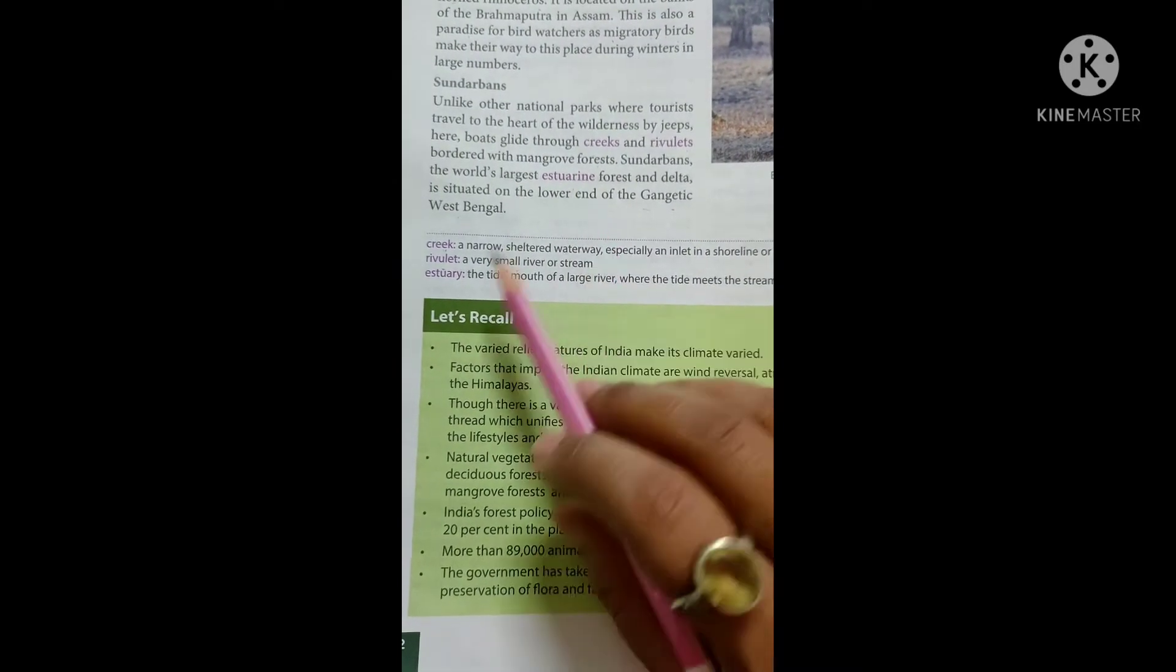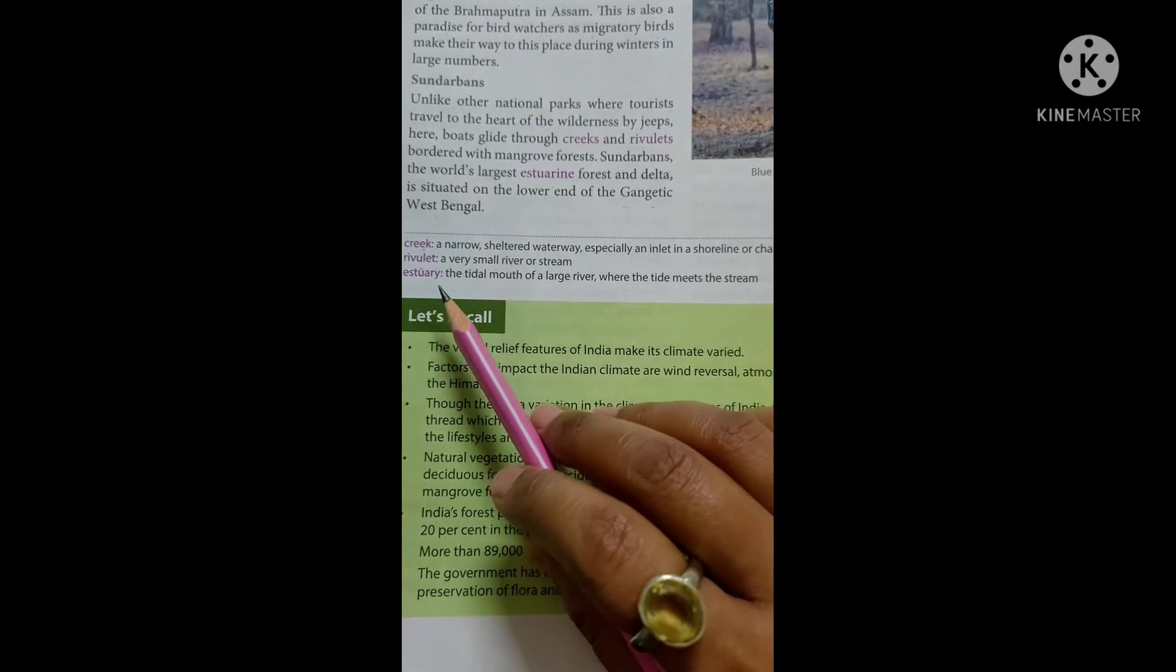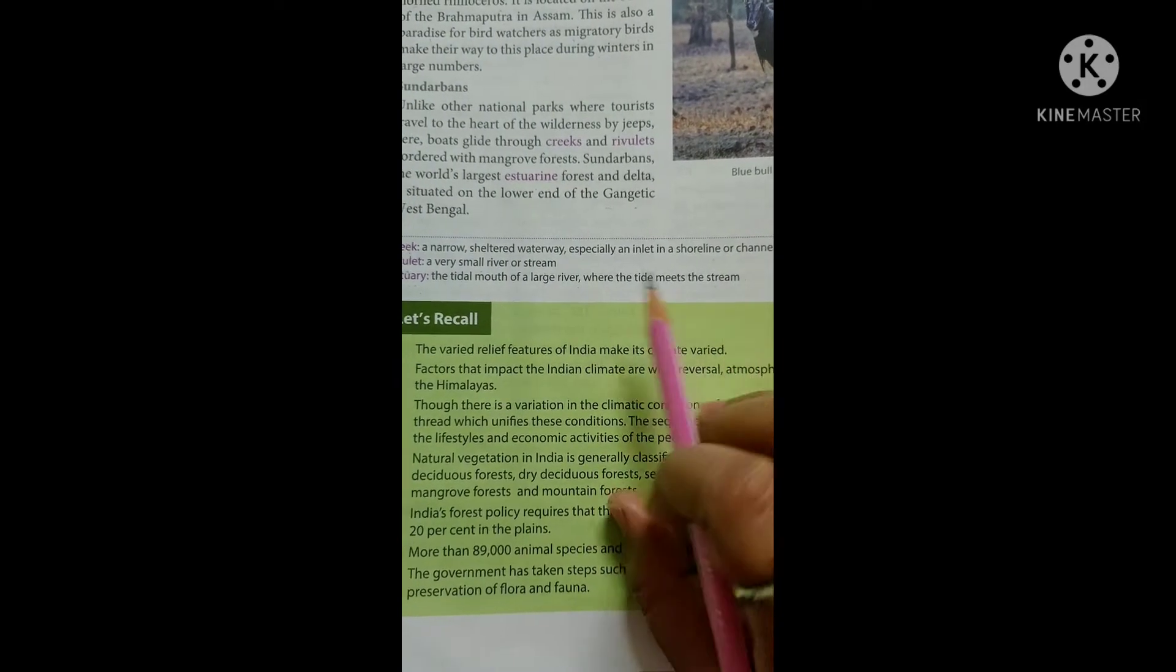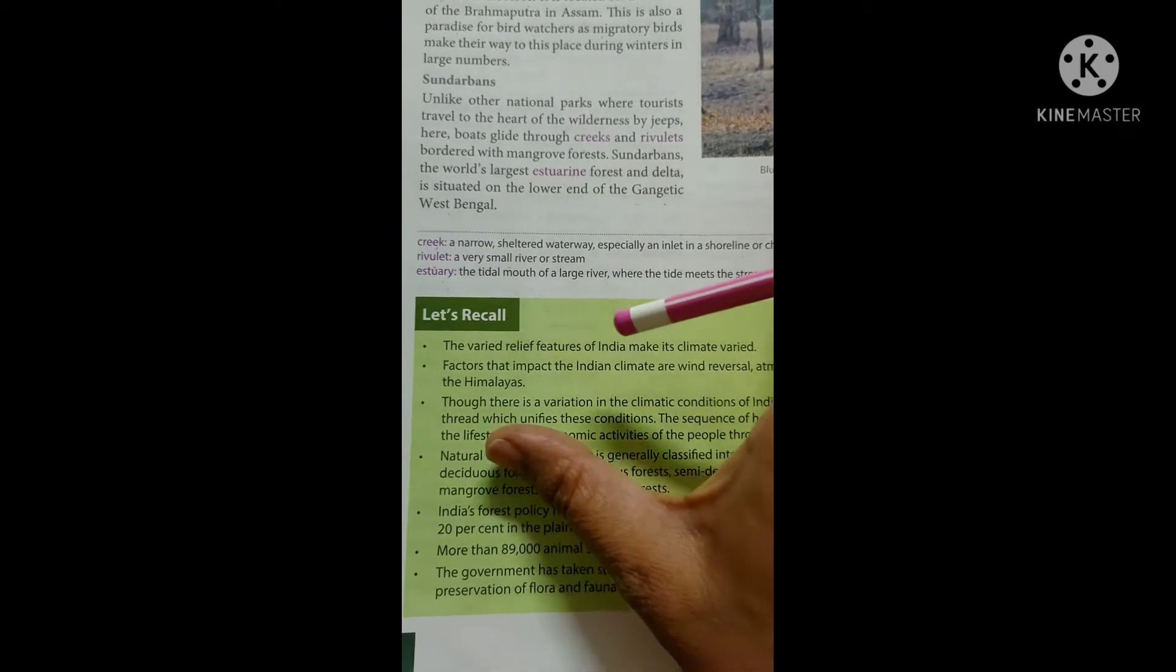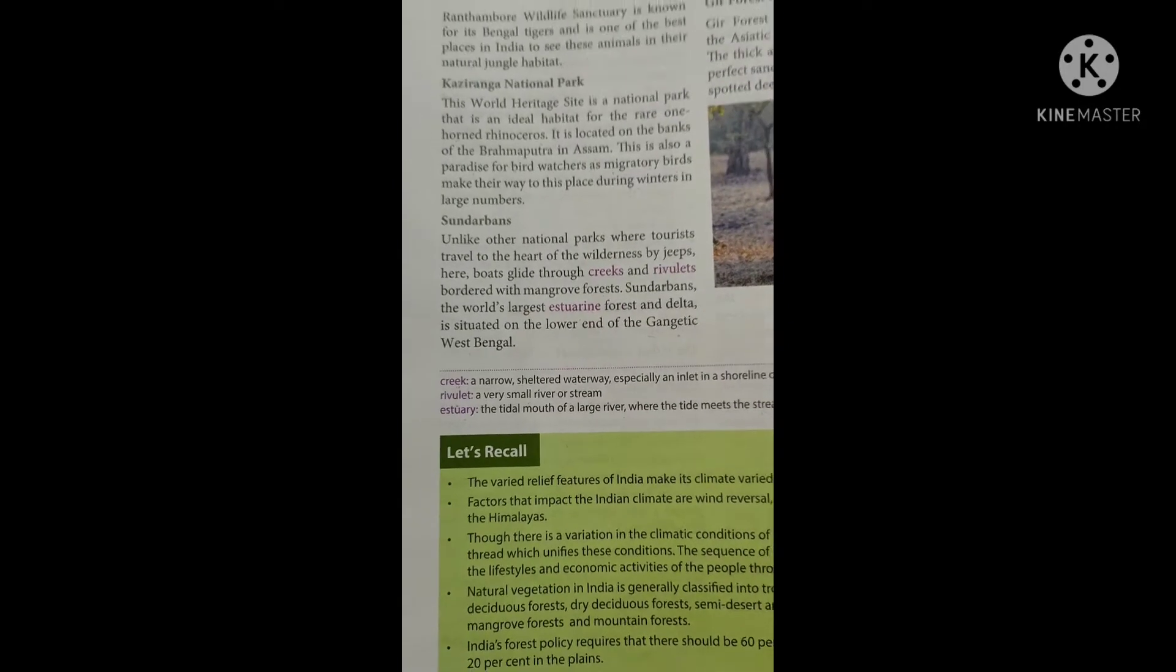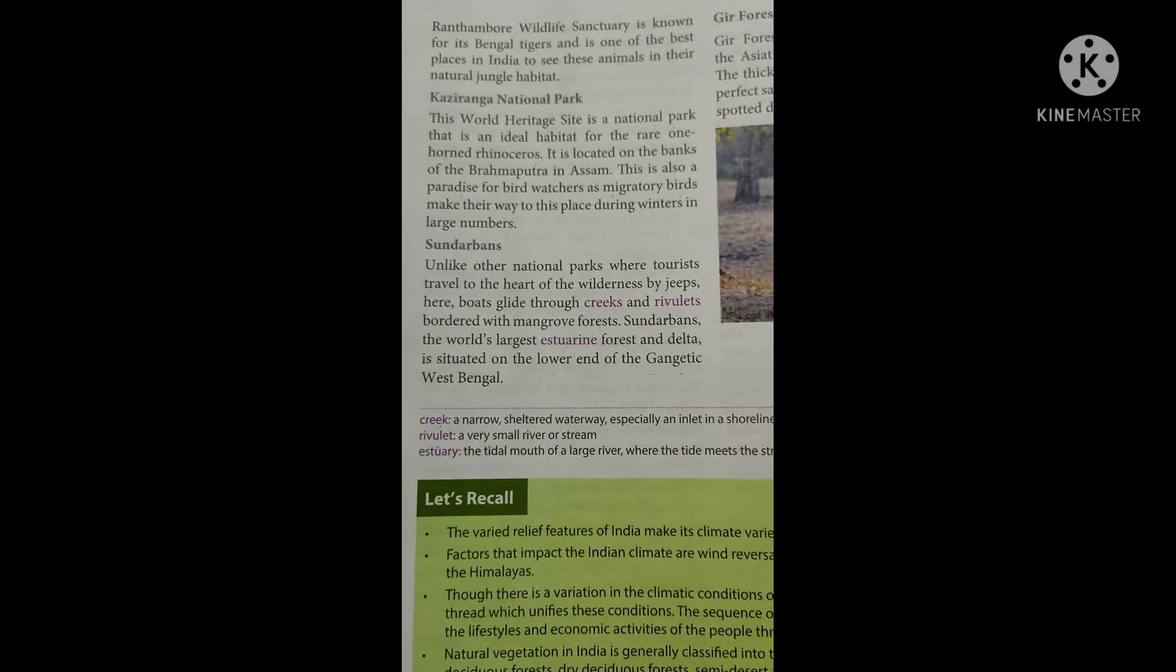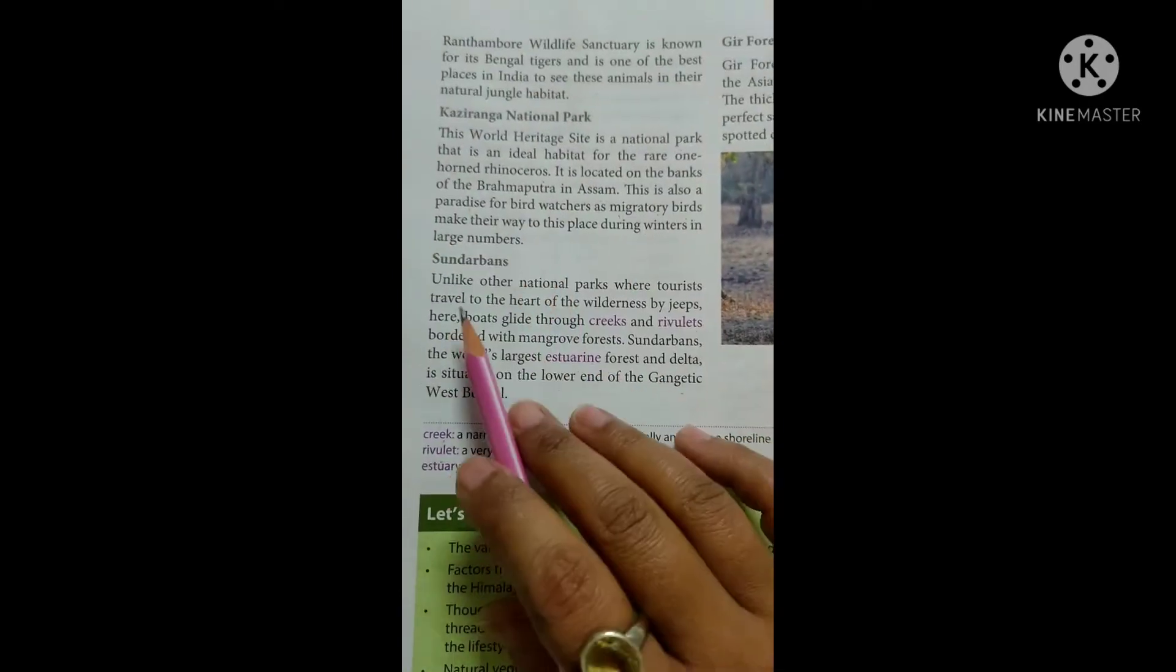Next is estuary. The tidal mouth of a large river where the tide meets the stream. It is a very big river. It is the largest delta of the world because here Brahmaputra and Ganga come to meet. That's how they have studied.